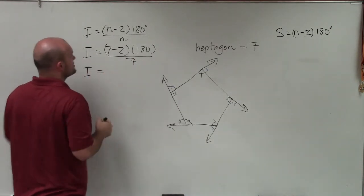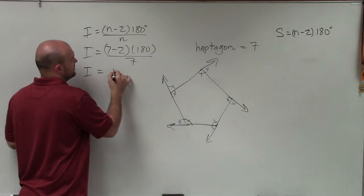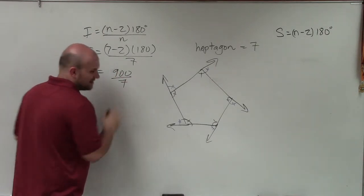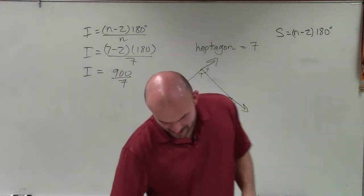I equals 5. 5 times 180 is 900 divided by 7. I do not know that at the top of my head.